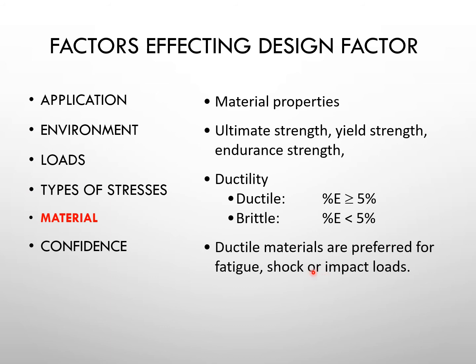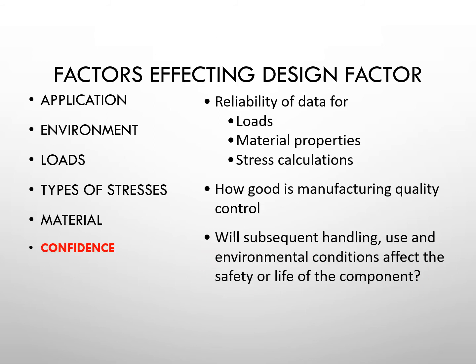The fifth factor is material. What material will you select — for example, plastic, steel, cast iron, or other materials? We consider the material properties: ultimate tensile strength, yield strength, endurance strength, and ductility. Whether the material is ductile or brittle matters — ductile materials are generally preferred for fatigue, shock, or impact loads.